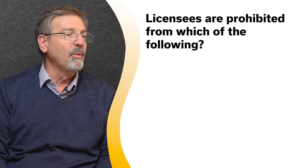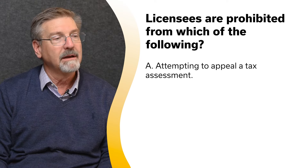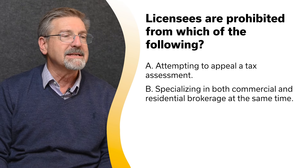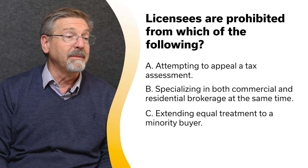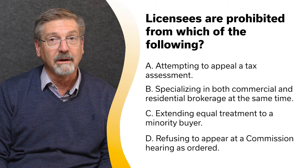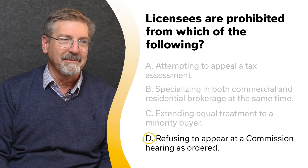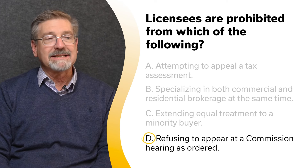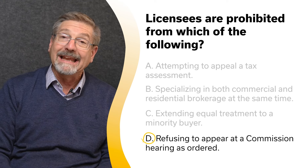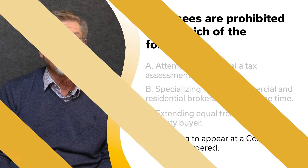Licensees are prohibited from which of the following? A. Attempting to appeal a tax assessment. B. Specializing in both commercial and residential brokerage at the same time. C. Extending equal treatment to a minority buyer. Or D. Refusing to appear at a Commission hearing as ordered. The correct answer is D — refusing to appear at a Commission hearing as ordered. All licensees are prohibited from refusing to appear at a Commission hearing, engaging in harassment of another licensee, or threatening to file a lien on a residential property.